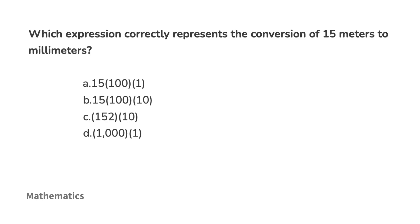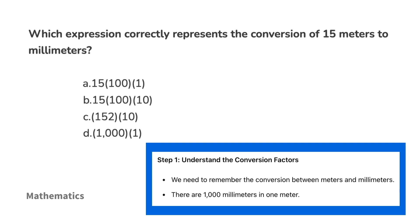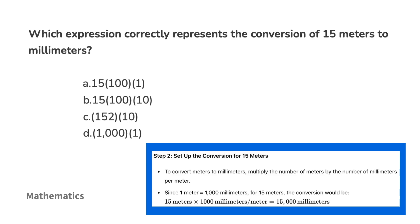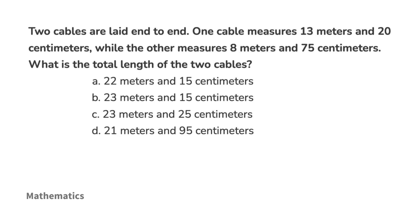Which expression correctly represents the conversion of 15 meters to millimeters? There are 1000 millimeters in one meter. To convert meters to millimeters, multiply the number of meters by 1000. For 15 meters this gives 15,000 millimeters. Knowing this, the answer is 15 × 100 × 10, which is option B.